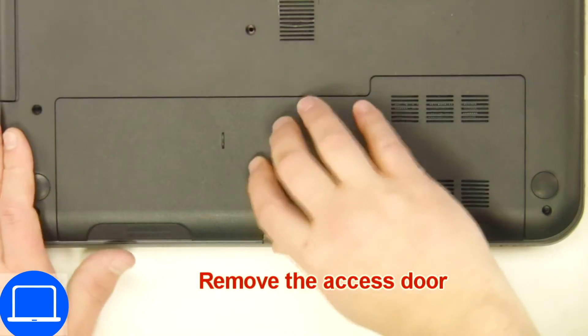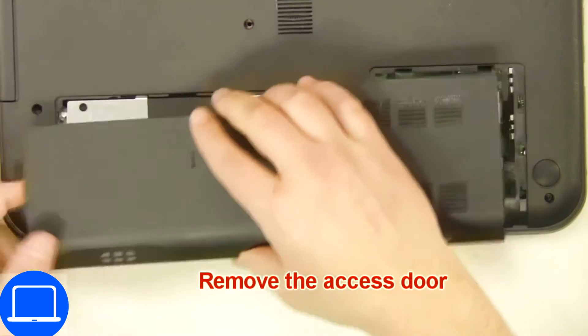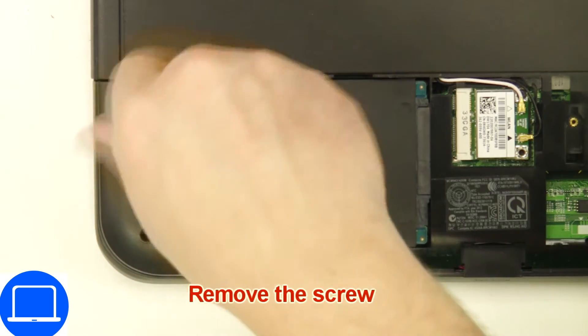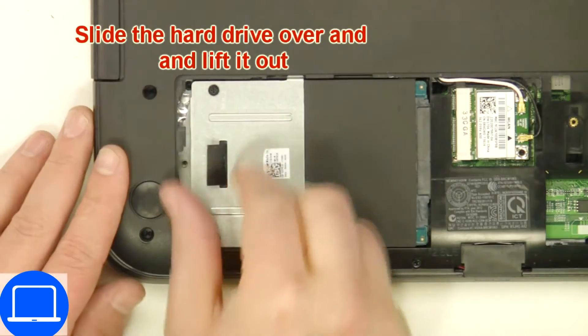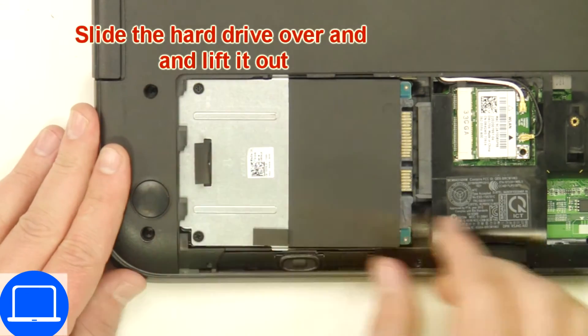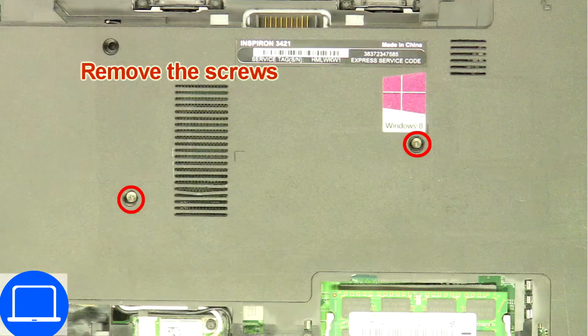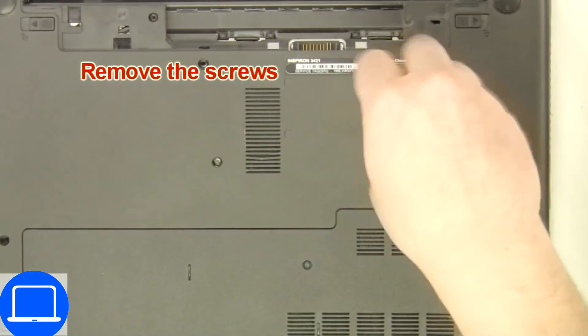Unscrew then remove access door. Now unscrew and remove caddy. Now unscrew bottom base.